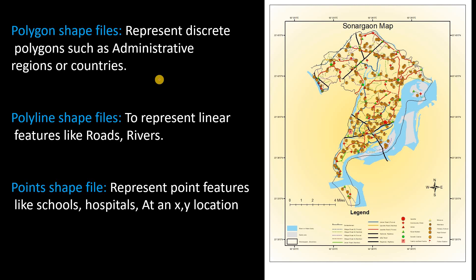We have polygon shapefiles for representing administrative areas or boundaries of regions and countries. Here I have a map of Schoenargao that I made using ArcGIS. I used polygons to draw the boundary of the administrative area. Then we have polylines to represent roads and rivers — you can see red lines, blue lines, and black lines here representing roads. And then we have point shapefiles to represent point features like schools and hospitals.